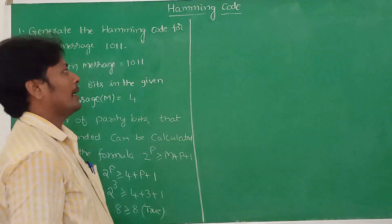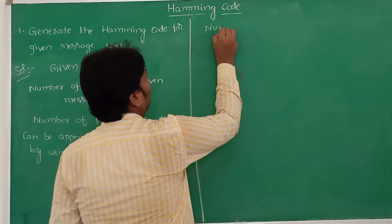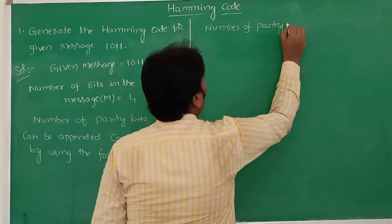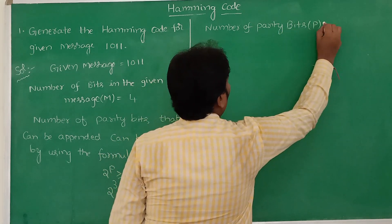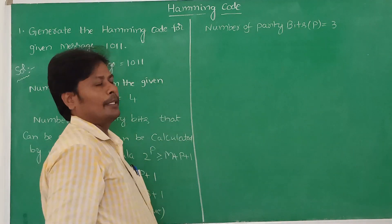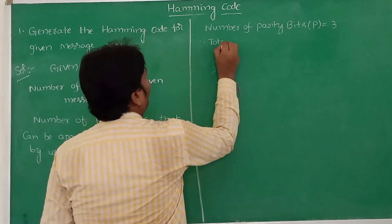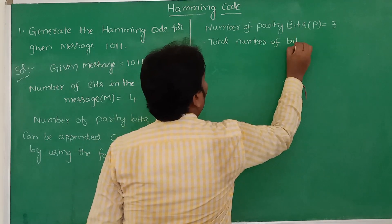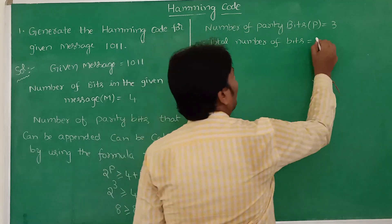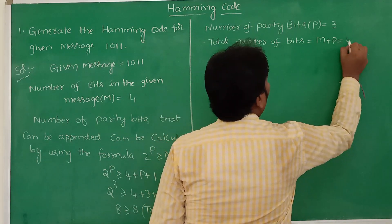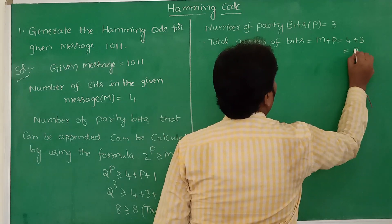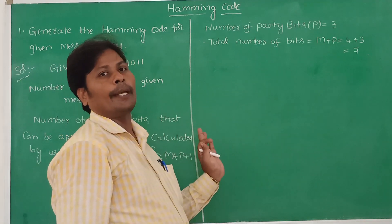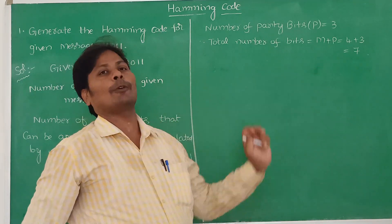Therefore the number of parity bits P is equal to 3. So total number of bits is equal to M plus P — M value is 4 and P value is 3, so 4 plus 3 equals 7. Total number of bits in the given message after appending the parity bits is equal to 7.